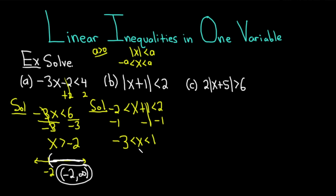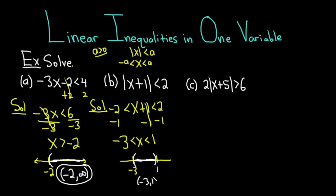These are all the numbers between negative 3 and 1. If you wanted to graph these on a number line, you would plot negative 3 here and 1 here, and it would be everything in between. Because we don't have an equal to in the inequalities — just less than — it's parentheses. So the answer here would be negative 3 to 1.